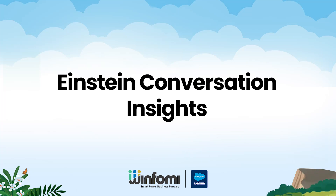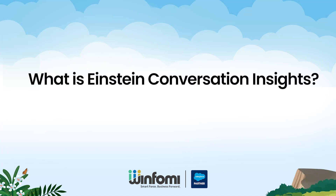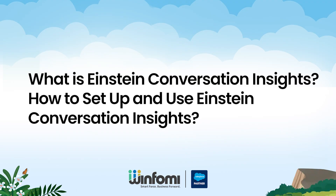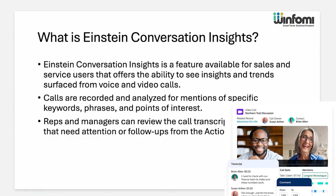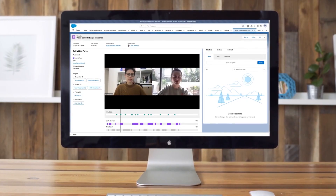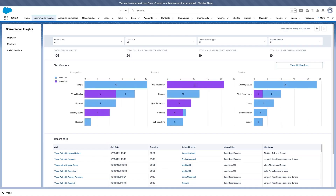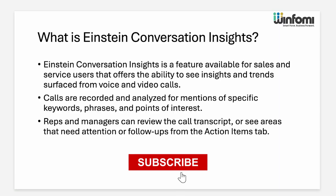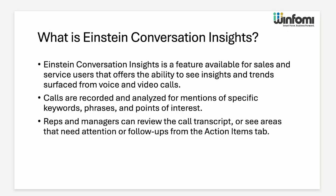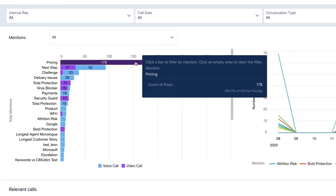We are going to see about Einstein Conversation Insights — what it is, how to set it up, and how to use it. Einstein Conversation Insights is a feature available for sales and service users that gives the ability to see insights and trends from voice and video calls. We can analyze the mentions of specific keywords, praises, and points of interest. Representatives and managers can review the call transcript or see areas that need attention or follow-ups from the action items tab.